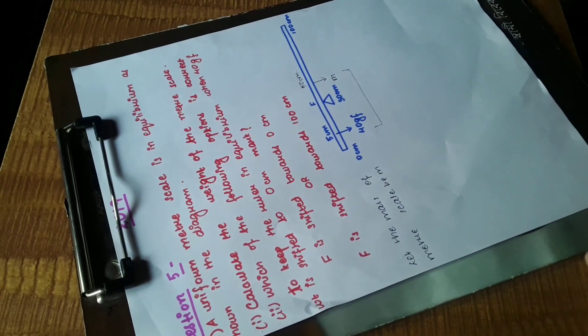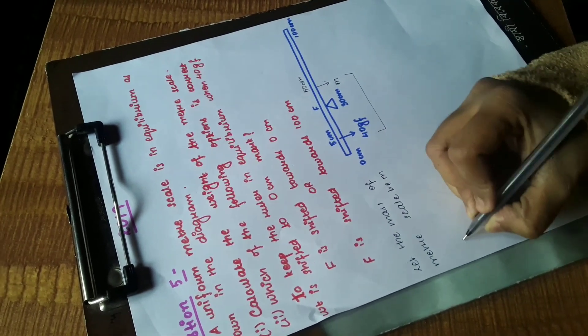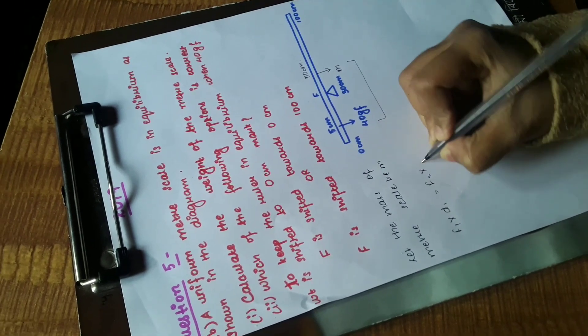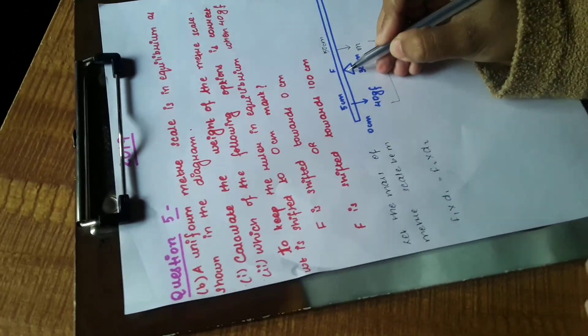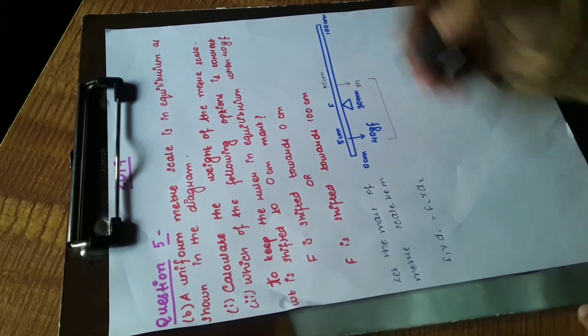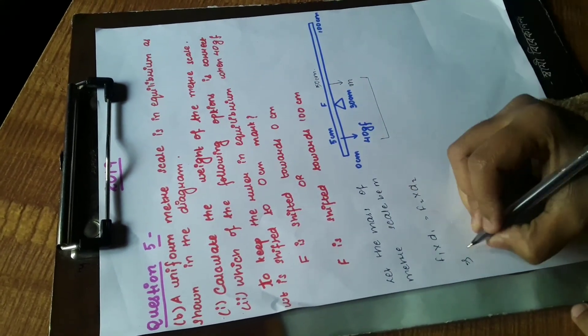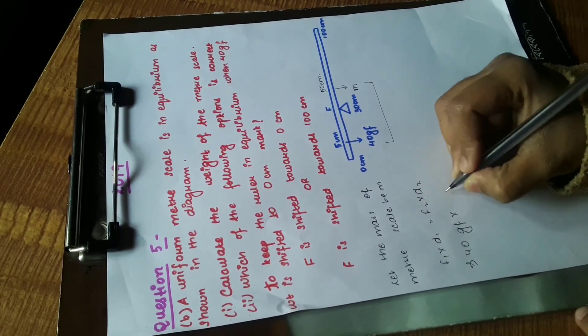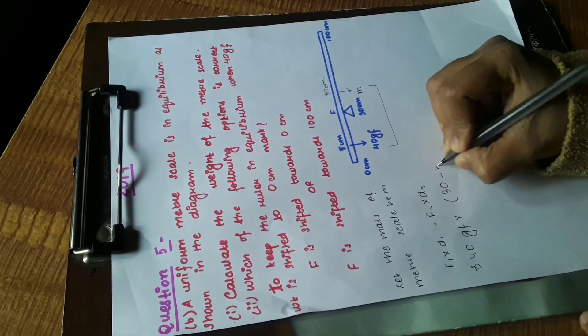Let's apply the common formula here. As we know, F1 × D1 = F2 × D2. D1 is this much because this is the fulcrum, and D2 is this much. Our F1 is 40 GF. Our D1 will be 30 minus 5 centimeter.